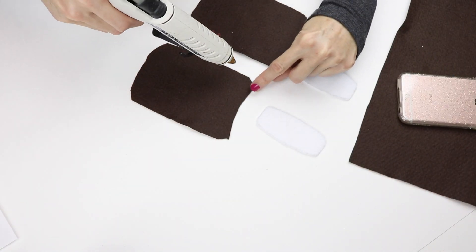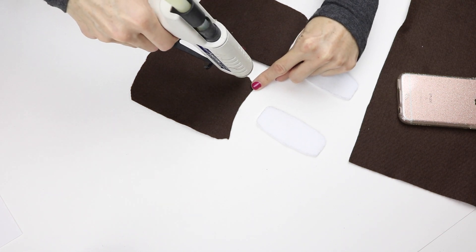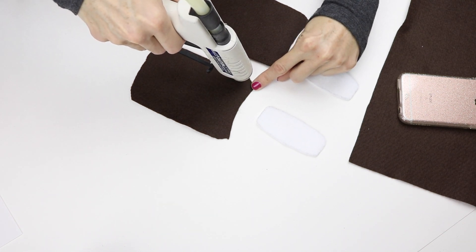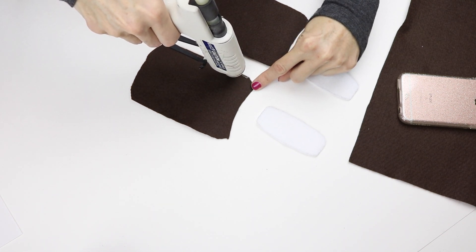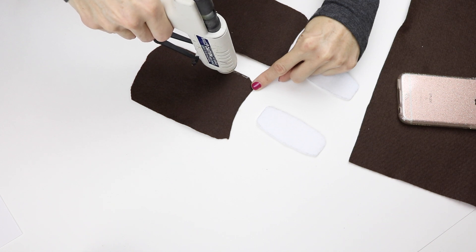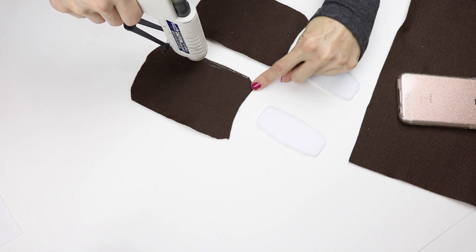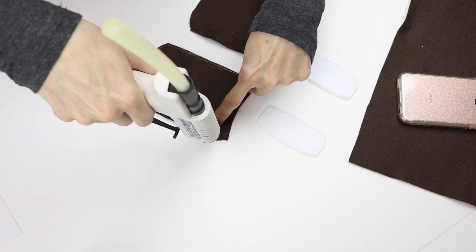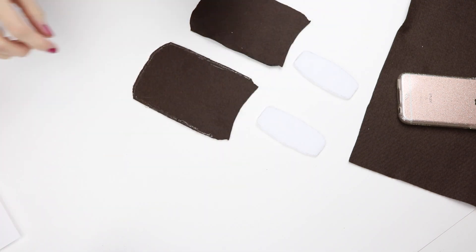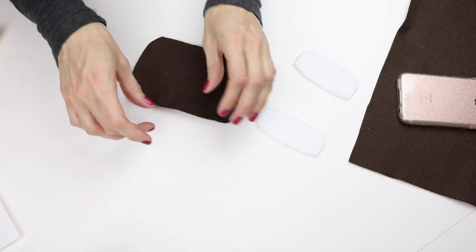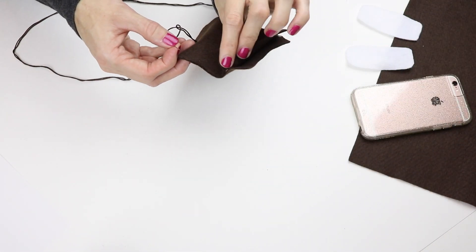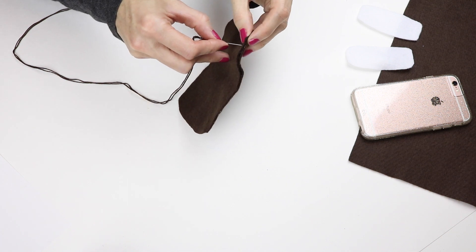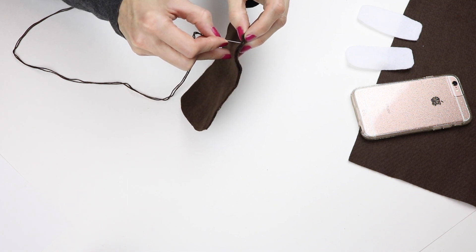Then I applied hot glue around the sides of the brown felt and put those together. The next step is optional. What I did was I just sewed around the outside of the case.